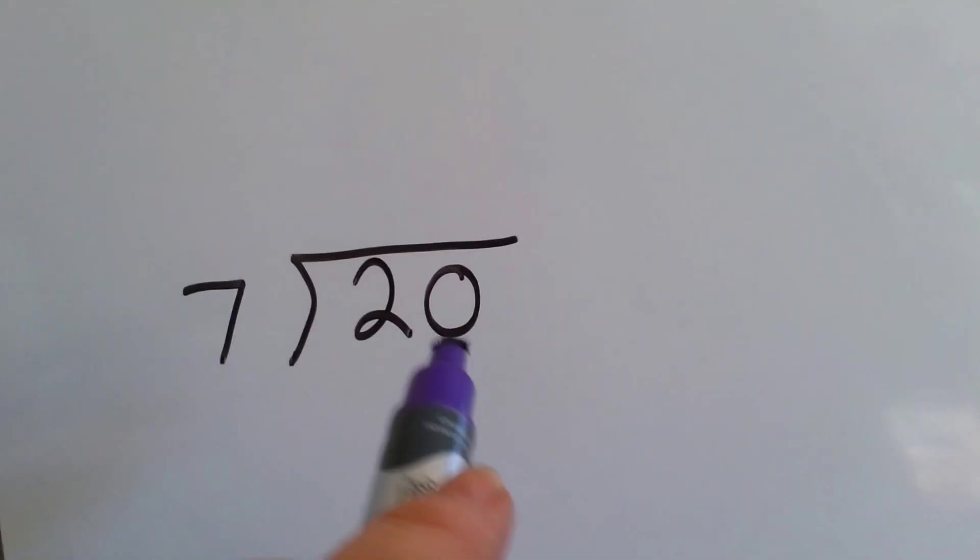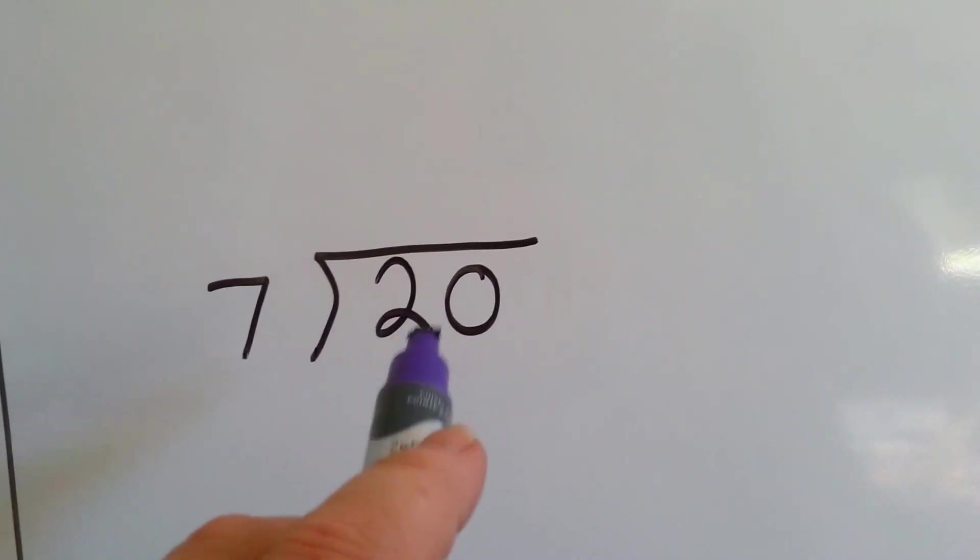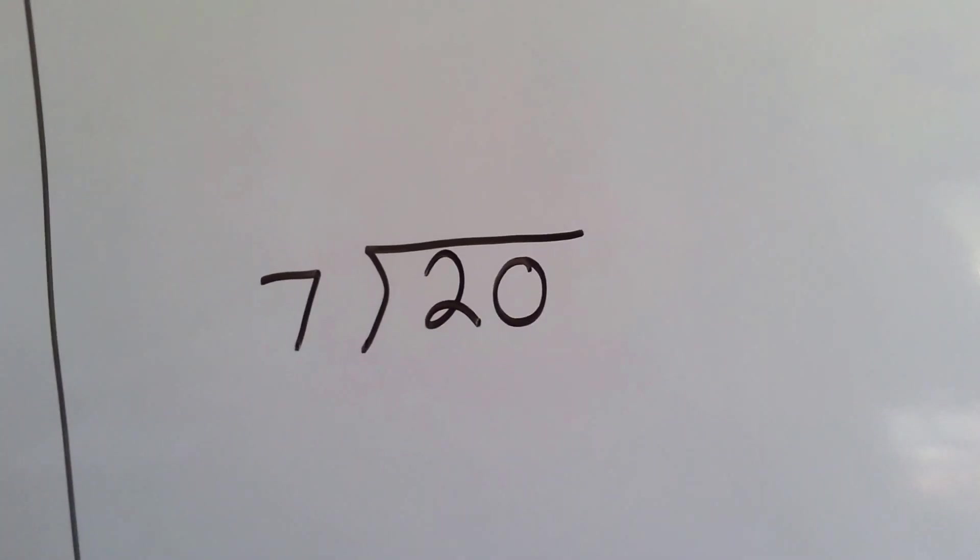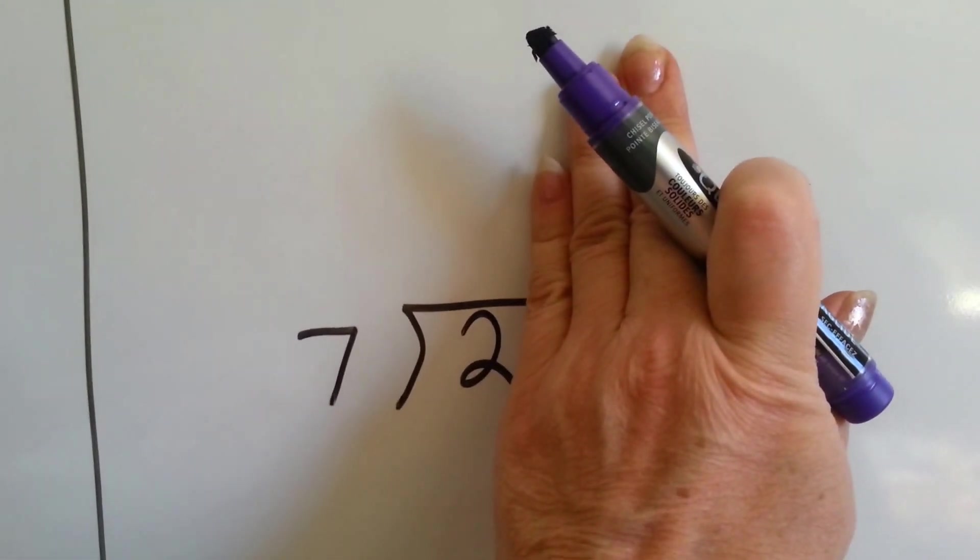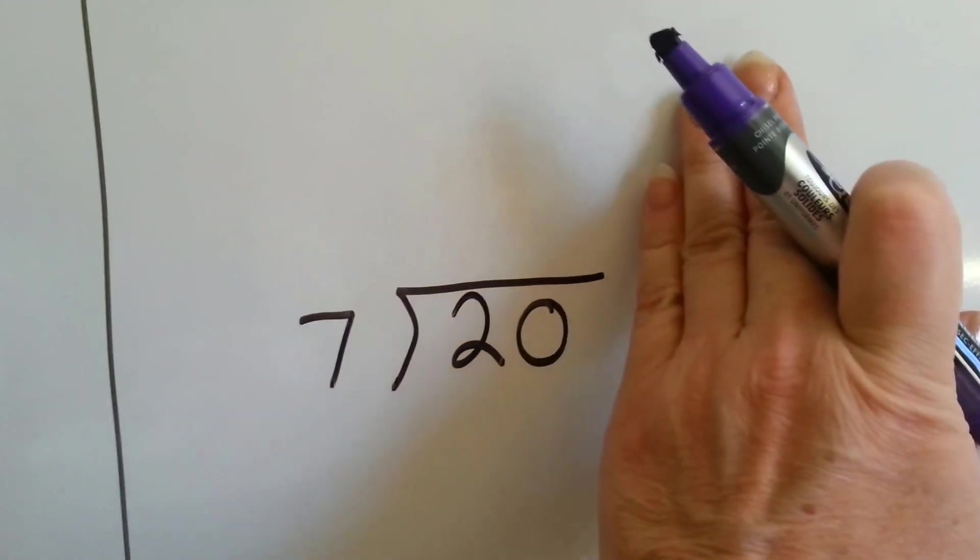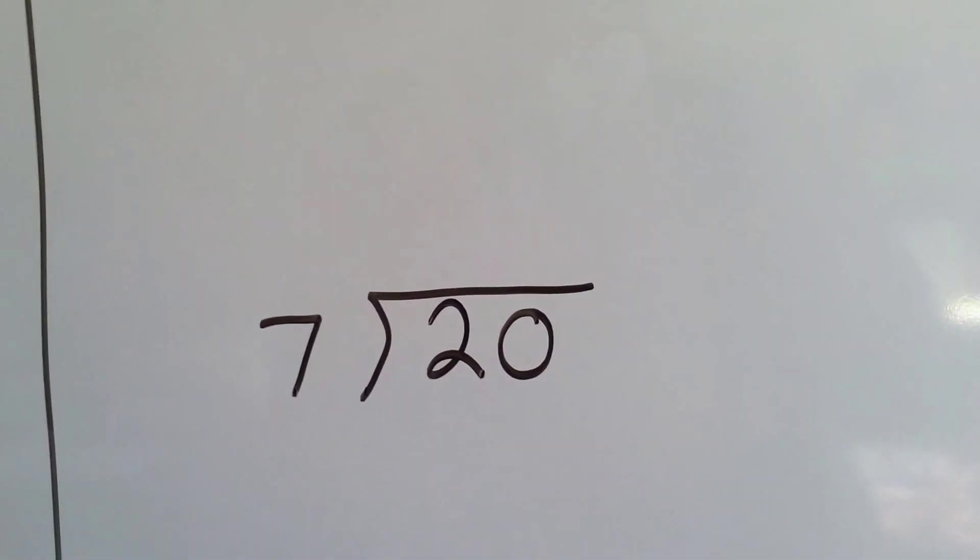Let's try this one. 20 divided by 7. How many 7's can fit into the 20? Not the 2. We're not fitting 7 into 2. We're fitting 7 into the entire 20.